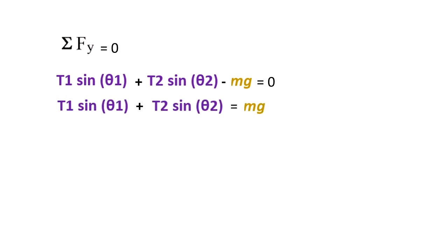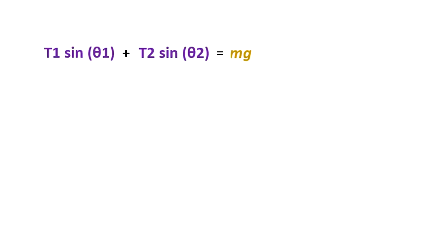The forces that we have in the y direction are T1 sine of theta1 going up plus T2 sine of theta2 going up minus mg that's going completely down and that's equal to zero. So I continue to work in this equation and now I am going to plug in the tension 2, the expression I got for T2 into this other equation and solve for T1.